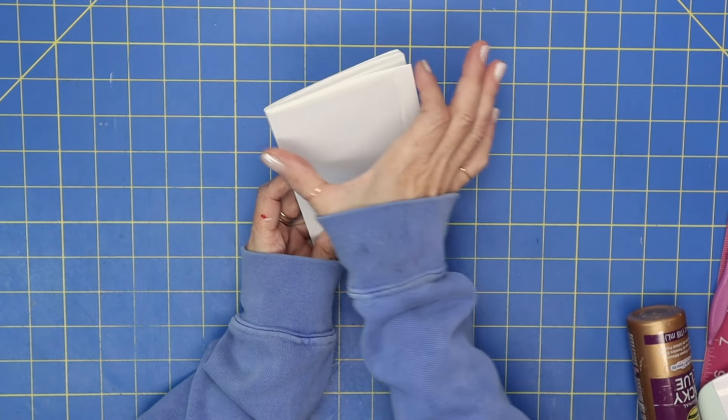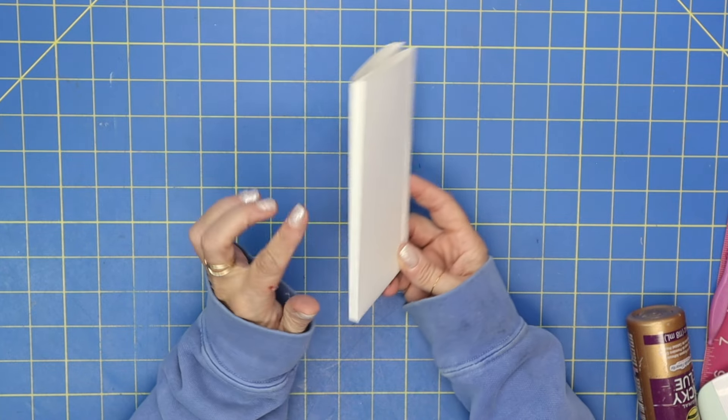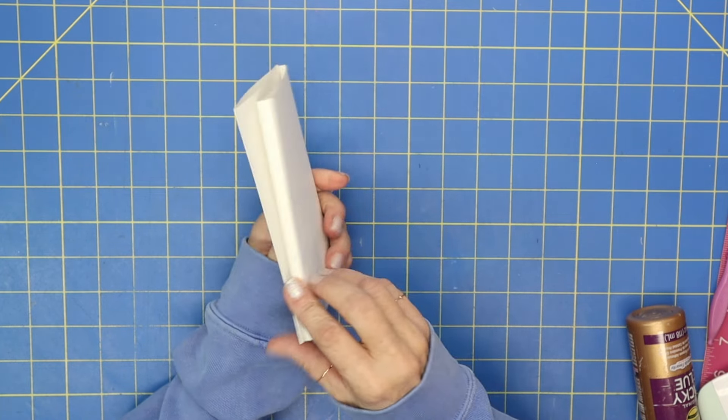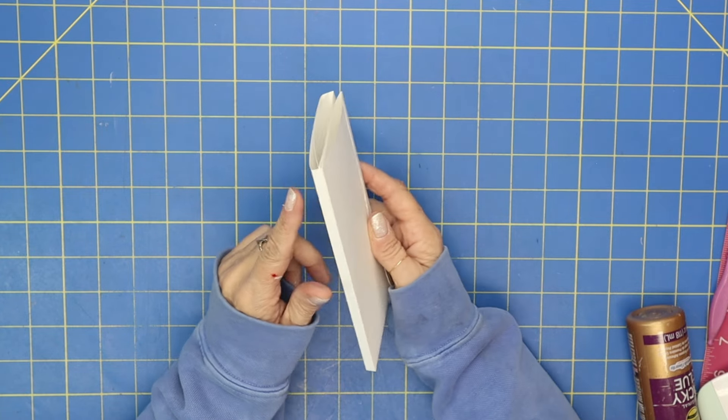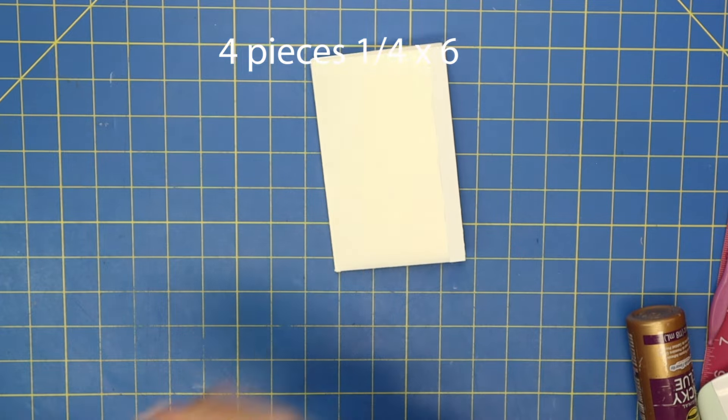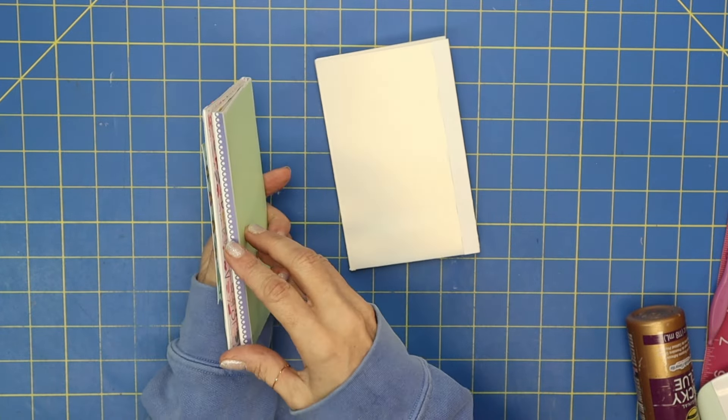So anyway, that is the base of our mini album—that folds over, that folds over, and obviously when you mat this you won't be seeing any of the seams. Now if you want to cover this quarter-inch spine, this is a quarter-inch by 6 inches.